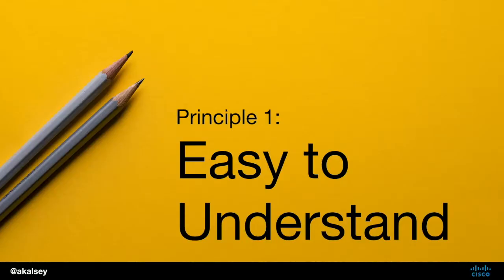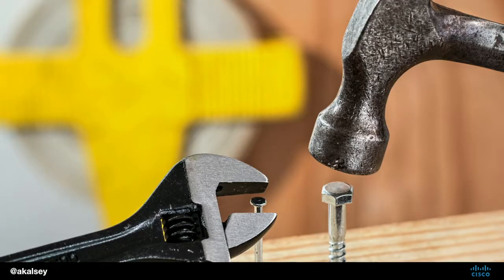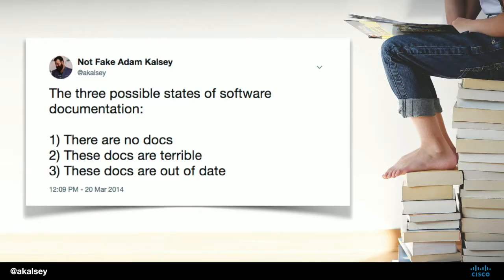The first of the six principles is that it's easy to understand: what does this thing do, what is it designed for, what is it not designed for, and why and how would I use it? This includes your documentation, quick-start guides, and tutorials — mostly communications you put out to your developer community, whether internal or external.